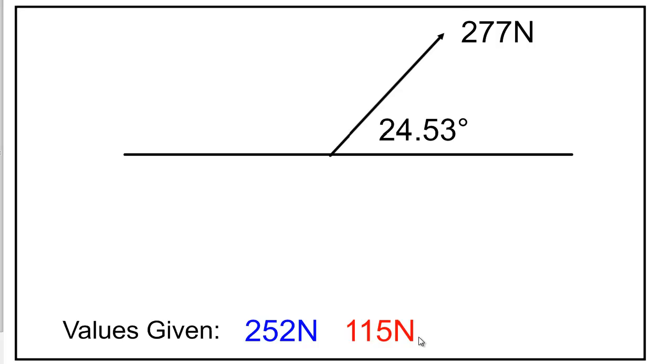We know a few things that we can fill in straight away. We know that the earth pulls downwards with 115 newtons, so that's the weight. My downward component here is 115. And then across here to the left, friction pulls back at 252 newtons.